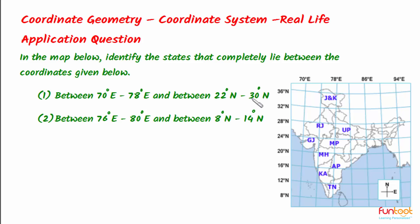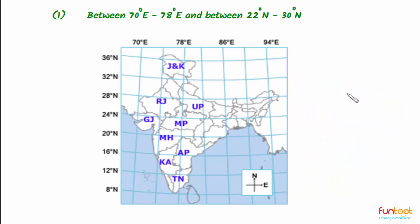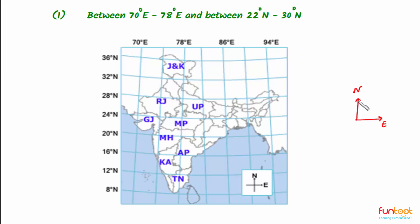In this map, the upward direction is north and towards the right is east. We can consider an XY coordinate system here, with the positive x-axis going eastwards and the positive y-axis going northwards. In the map, horizontal lines are latitudes and vertical lines are longitudes.